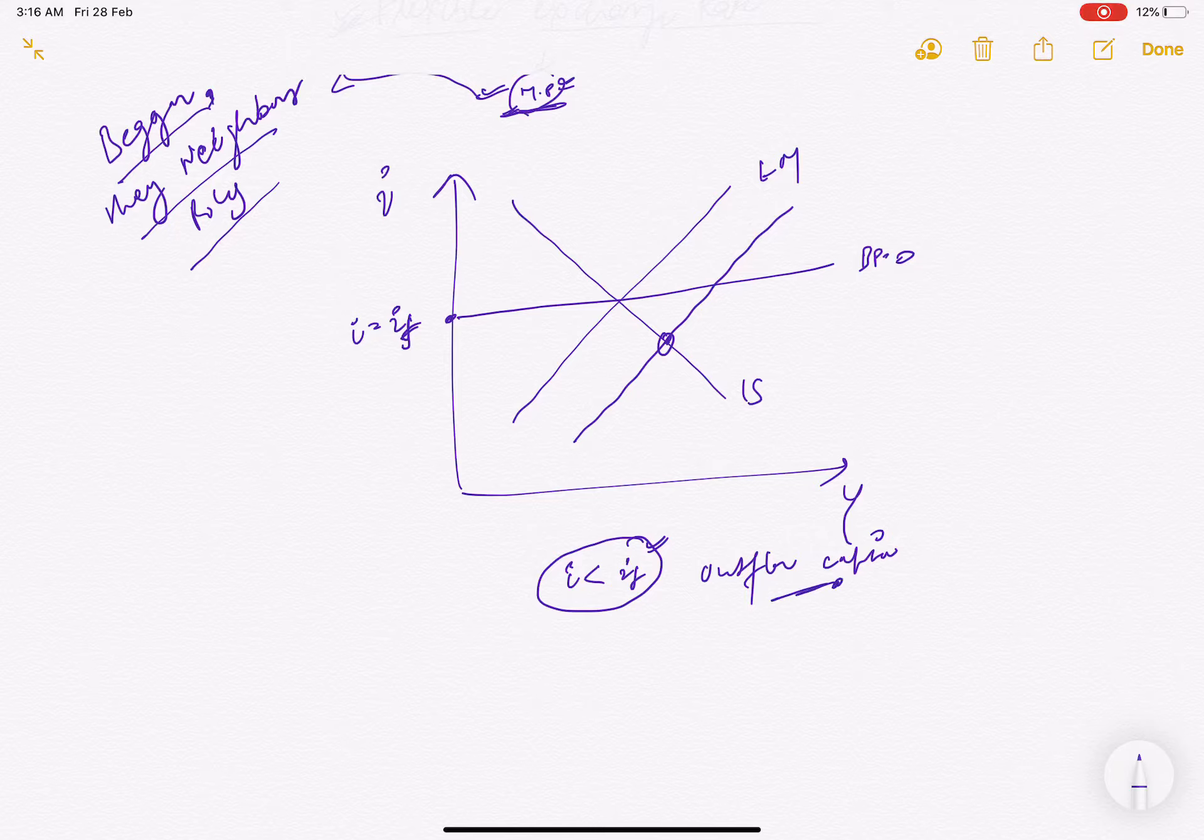When there is capital outflow, our currency will depreciate. When our currency depreciates, our goods become cheaper compared to foreign goods. When they become cheaper, our net exports increase. That means the IS curve shifts rightward, and our output increases.